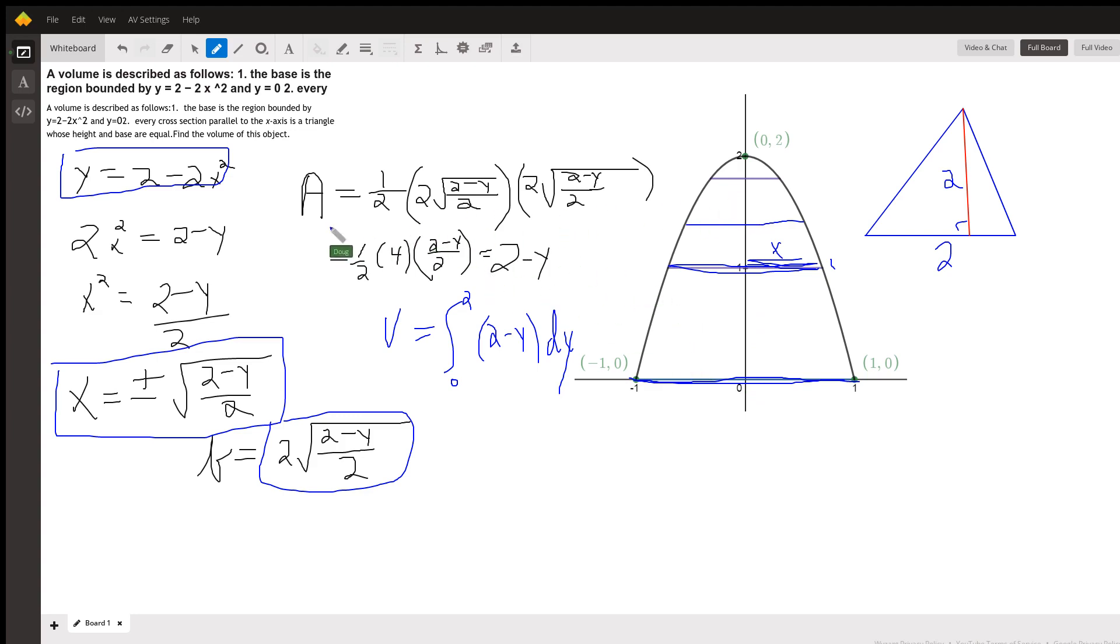And then the formula for the area of each cross-section is one half of base times the height. And because the base and the height are equal, I could have just written this as the quantity squared. But I wrote it this way for emphasis. But when you simplify it, you get this.